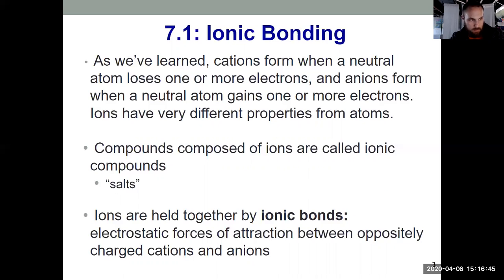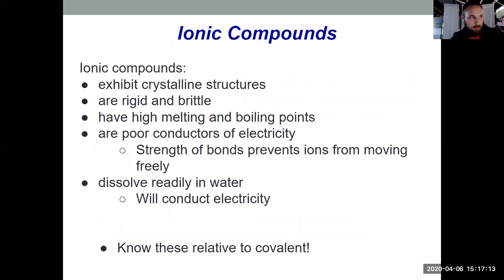And ionic compounds are held together by ionic bonds. It's an electrostatic force of attraction between oppositely charged ions. So we've got a cation positive and anion negative. They're attracted to one another with an ionic bond. And that's a strong bond, and it does prevent electrons from flowing freely. They're locked into place in those bonds.